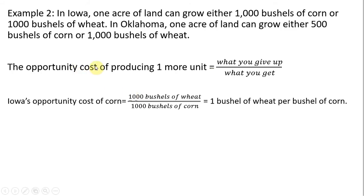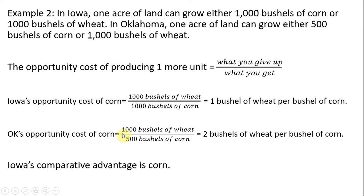Moving on to example two. In Iowa, one acre of land can grow either 1,000 bushels of corn or 1,000 bushels of wheat. In Oklahoma, one acre can grow either 500 bushels of corn or 1,000 bushels of wheat. Using the same formula — what you give up divided by what you get — Iowa's opportunity cost of corn is 1,000 bushels of wheat divided by 1,000 bushels of corn, which equals one bushel of wheat per bushel of corn. Oklahoma's opportunity cost of corn is 1,000 bushels of wheat divided by 500 bushels of corn, which equals 2 bushels of wheat. Lower numbers being better, Iowa has a comparative advantage in corn production — Iowa sacrifices less wheat to produce a given bushel of corn than does Oklahoma.